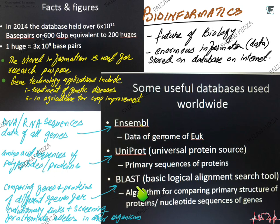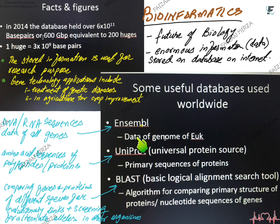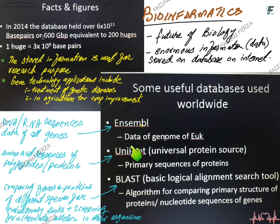BLAST pulls these things together. These databases also have interlinks — so if you are studying a gene on Ensembl and want to know the protein structure as well, there is a small UniProt tab on the page; clicking it drags you straight to UniProt. The same way the internet works, you can jump from one website to another. You can visit Ensembl and UniProt on smartphones too. BLAST is constantly used for comparison of primary protein structures and nucleotide gene sequences across organisms — again, enormous information.